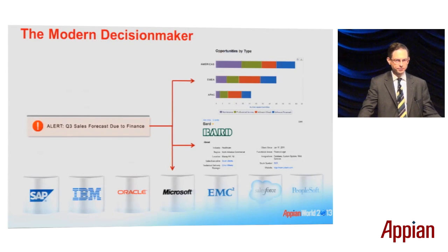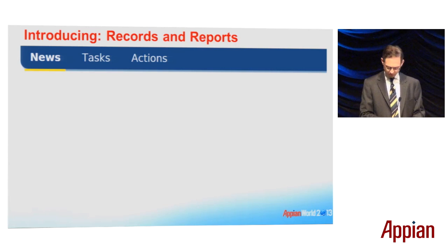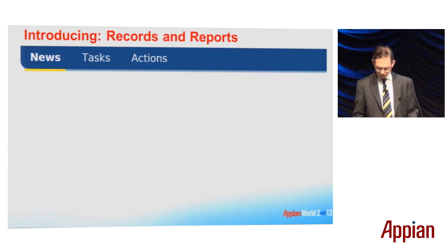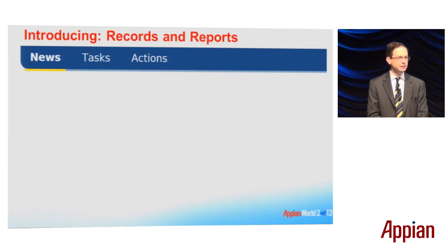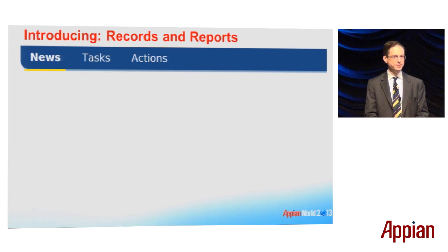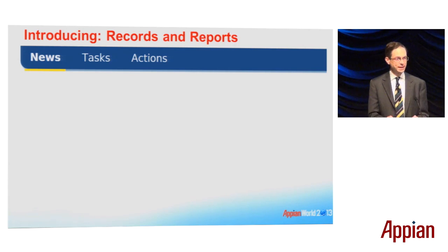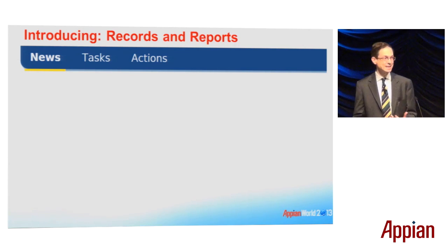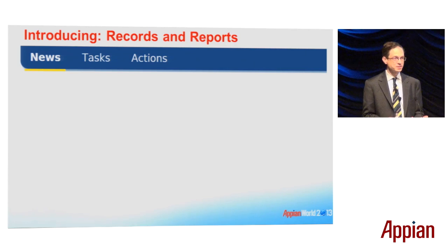Speaking of data, I've got another announcement. If you're using the latest version of Appian and you've kept up with our releases, then you know that at the top menu bar you've got three tabs. I love that we only have three tabs. We have three tabs and they say exactly what we do: news, tasks, and actions.